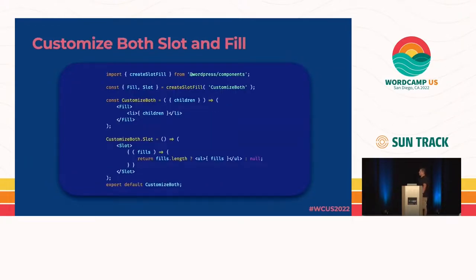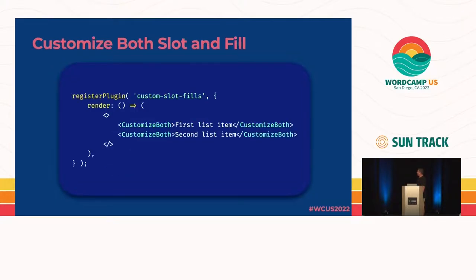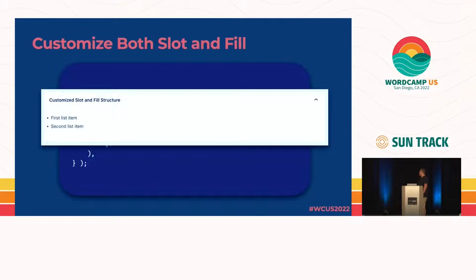We can customize both slot and fill. In this trivial example, in our fill we're wrapping everything in an LI, and in our slot we're wrapping it in a UL — so we're building out an unordered list. You can see how combining these could be very powerful. We're exposing our slot, using the custom slot fill to create list items, and when it renders, it renders like a list.